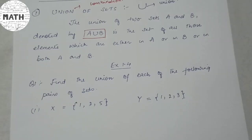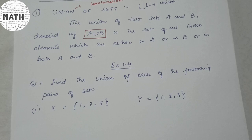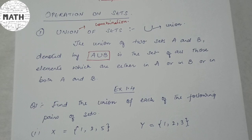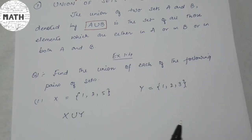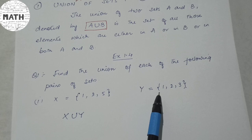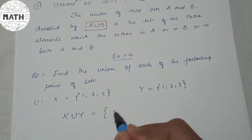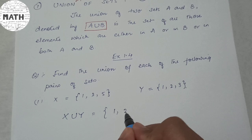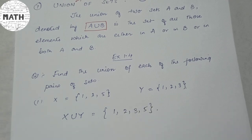In Exercise 1.4, Question 1: Find the union of each of the following pairs of sets. Number 1: X = {1, 3, 5} and Y = {1, 2, 3}. I have to find X union Y. Union means combination, so I combine both sets. In a set, there is no repetition of elements, so I write each element only once. The answer is {1, 2, 3, 5}.